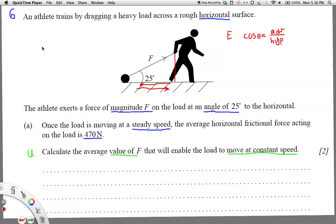Alright, I'm gonna use the GUESS method to solve this problem. So what I did here was I highlighted all the givens, the G part of the GUESS method. An athlete trains by dragging a horizontal load across a rough horizontal surface. So it's rough too, so I probably should have highlighted that there. I'm gonna go ahead and do that here.